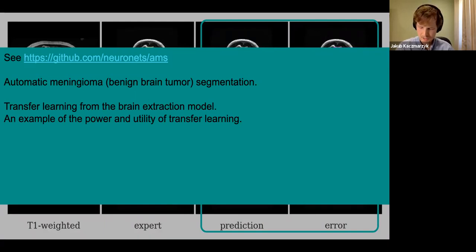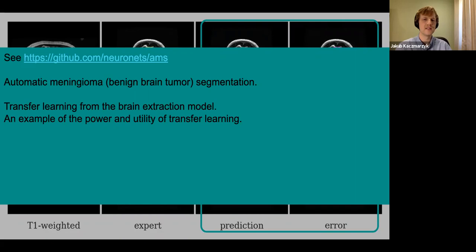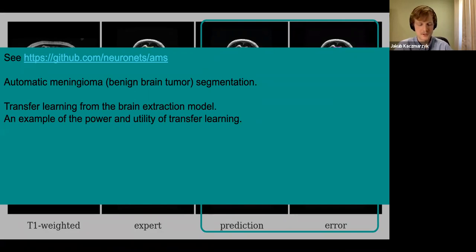I don't know if Professor Richards talked about specific architectures, but the brain extraction model and the meningioma model are 3D U-Nets, which came out in 2016. The first segmentation network I showed is based on MeshNet.